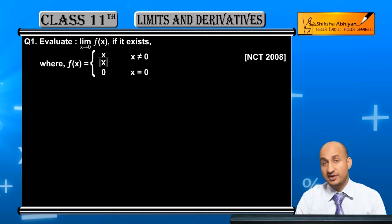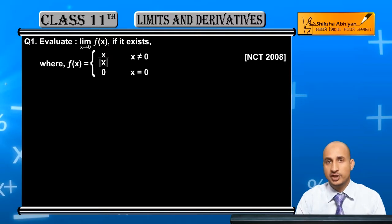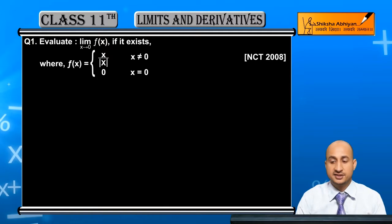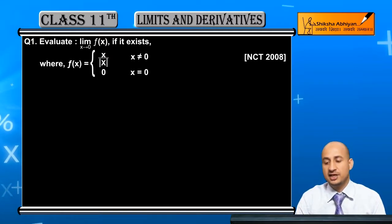Evaluate limit x→0 of f(x) if it exists, where f(x) = x/|x| when x ≠ 0, and f(x) = 0 when x = 0.